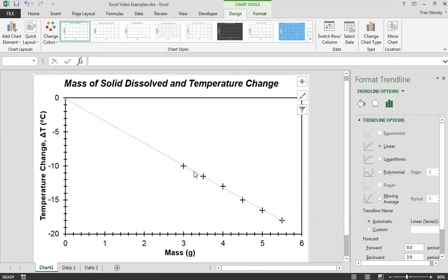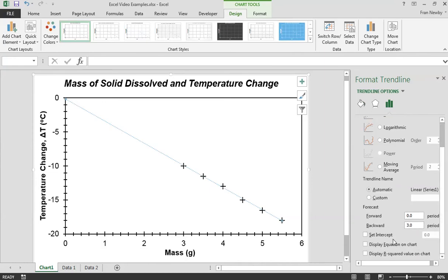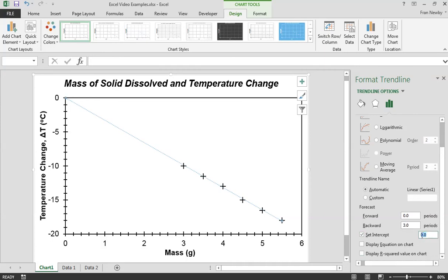Sometimes when we're doing these trend lines we recognize that we're actually going to want the origin to appear on our graph. In that case we can tick this set intercept box and then just put that to be 0, 0, and that will make sure that it forces it through the origin.